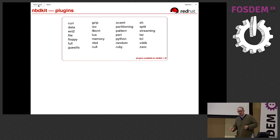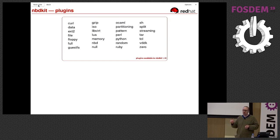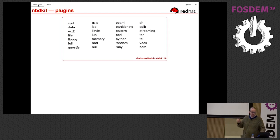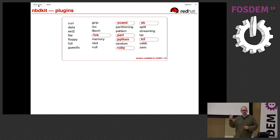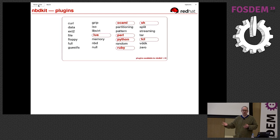If you don't want to write a plugin — and I'm going to show you how, it's very simple — many other plugins are available. I've listed the ones in nbdkit 1.10. Some of these plugins aren't quite like the others: there are plugins like Perl and Python which are gateways to writing plugins in non-C languages, so you can write plugins in scripting languages, even in shell scripts.